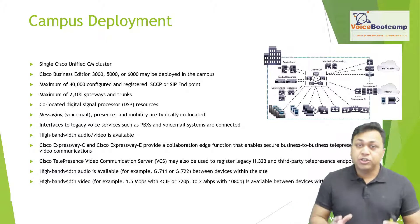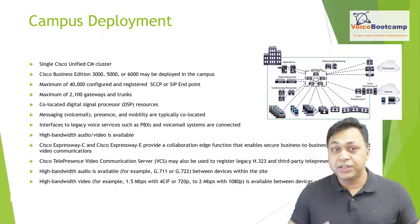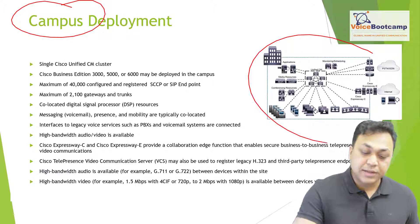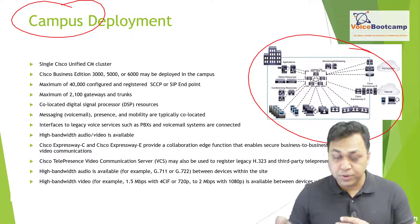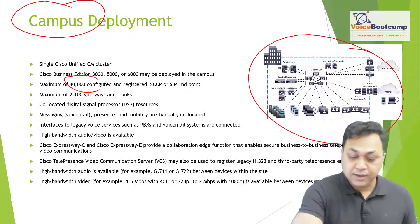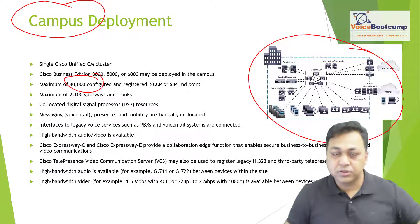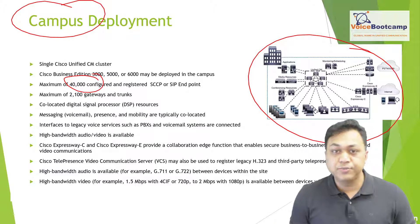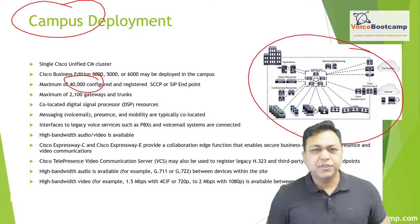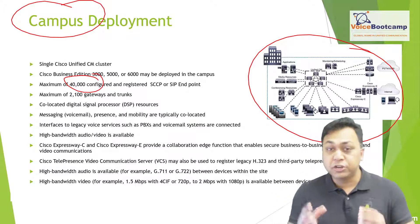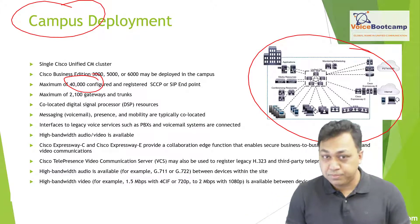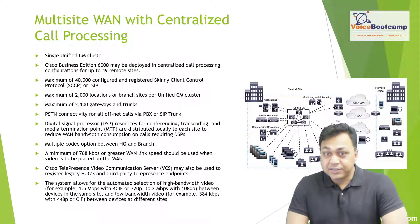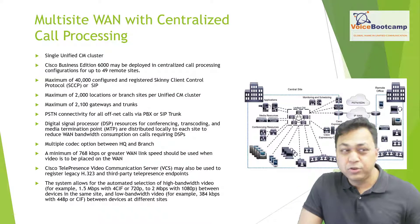The single-site deployment model, often known as the campus model, places everything in one physical location in your data center. On-premise you can support up to 40,000 IP phones depending on design, a maximum of 2,100 gateways, and DSPs in the same location. Since everything is centralized in one office, you can choose high-quality codecs such as G.711. That is the single-site model — no branch offices — though you may use the WAN for SIP trunking.